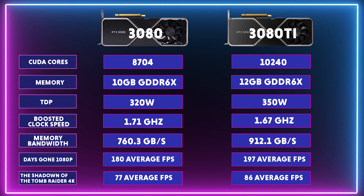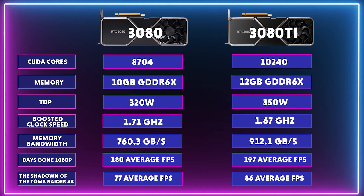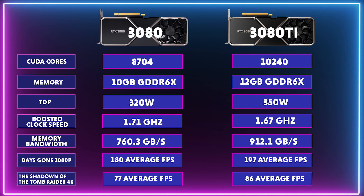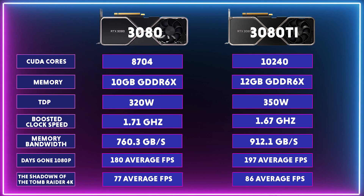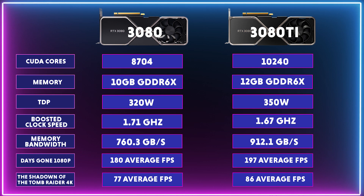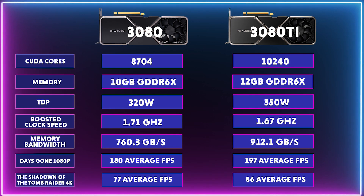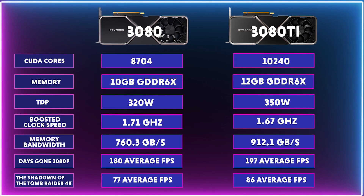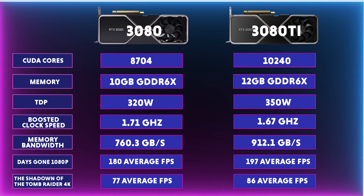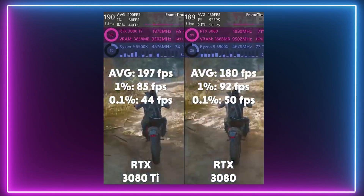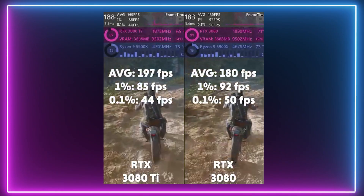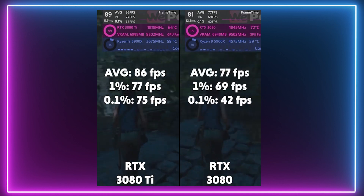Let's compare the RTX 3080 and RTX 3080 Ti. As you can see, the 3080 Ti is closely spec'd to the original 3080 with a few subtle differences. It has more CUDA cores, 2 gigabytes more memory than the original, and it uses more power, although the clock speed is not as fast as the 3080's. These differences equate to a higher average FPS in most game titles.